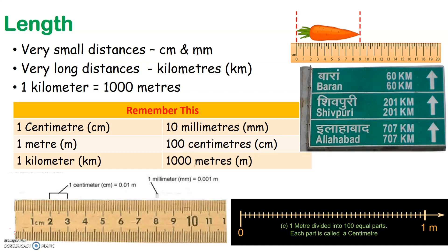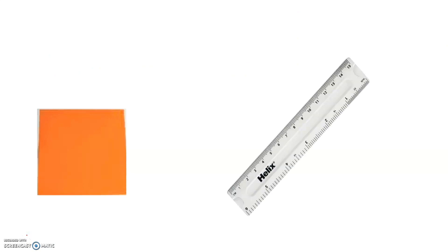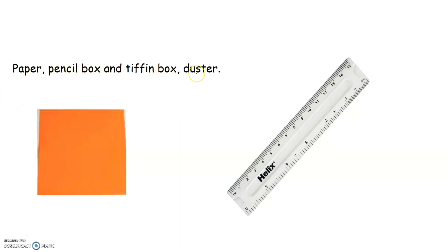Now let us learn how we can measure the length of various objects. Look at this picture here — we have a small card. How can we measure the length of this card? This can be done with the help of a scale. Short distances can be measured with a scale. For objects like a paper, pencil box, tiffin box, or a duster, all these can be measured with the help of a scale, like how you see here in the picture.